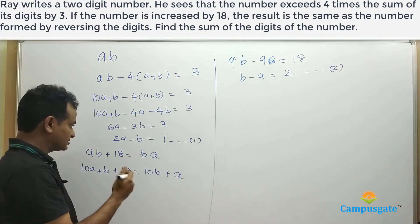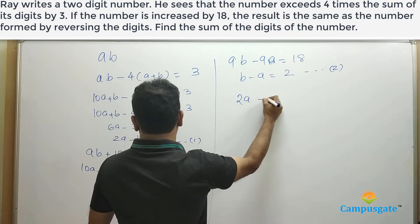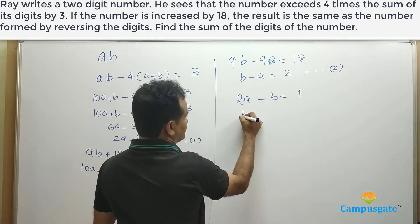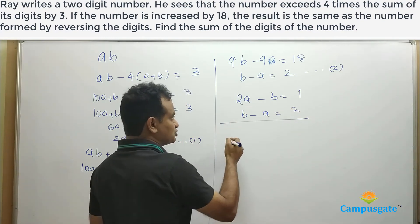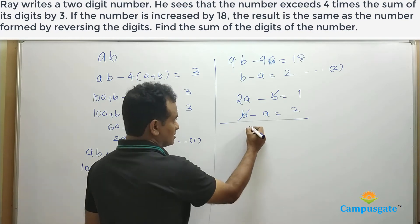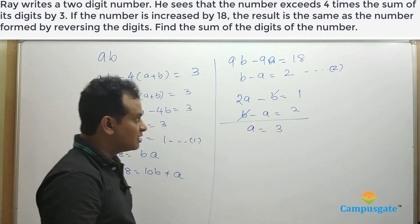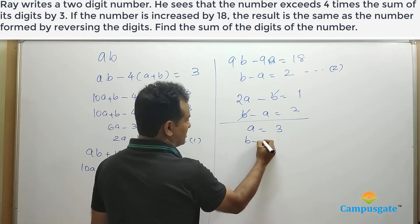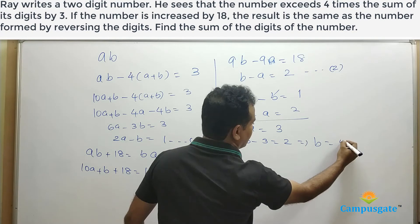Let us solve these two equations. Equation 1 is 2A minus B equal to 1, and equation 2 is B minus A equal to 2. Adding these two equations, minus B plus B gets cancelled out, and we get A equal to 3. Substituting A equal to 3 in the second equation: B minus 3 equal to 2, therefore B equal to 5.